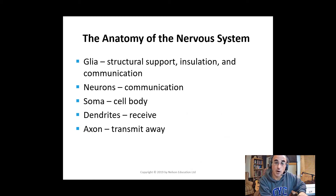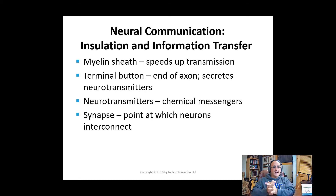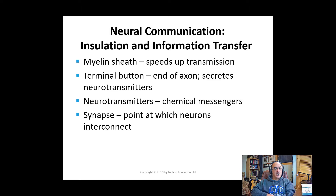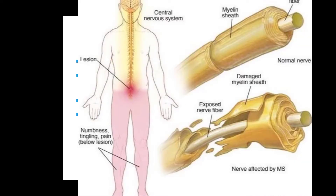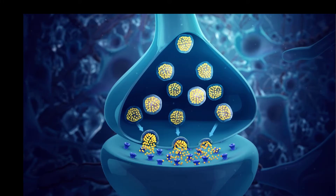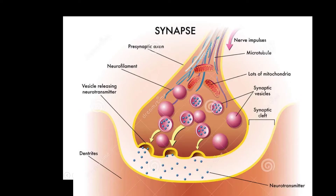The basic flow of information is: the dendrite receives a signal, which passes through the soma and down the axon to the dendrites of another neuron. For efficient transmission, many axons are covered with an insulating material called myelin. Myelin sheaths speed up transmission of signals along the axons. Multiple sclerosis is a myelin degeneration disease causing loss of muscle control due to loss of transmission efficiency. At the end of an axon, terminal buttons are small knobs that secrete chemical messengers called neurotransmitters.